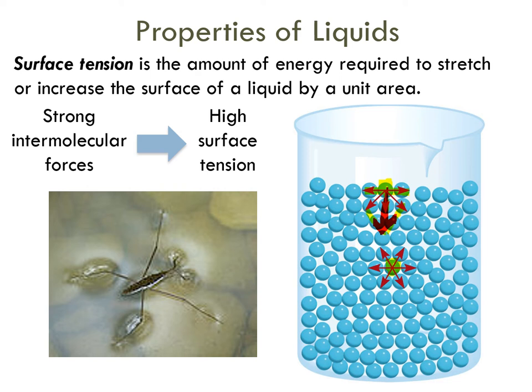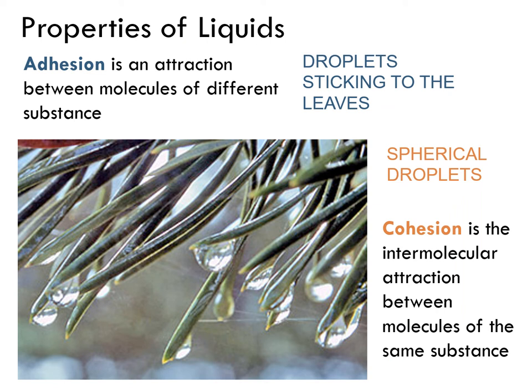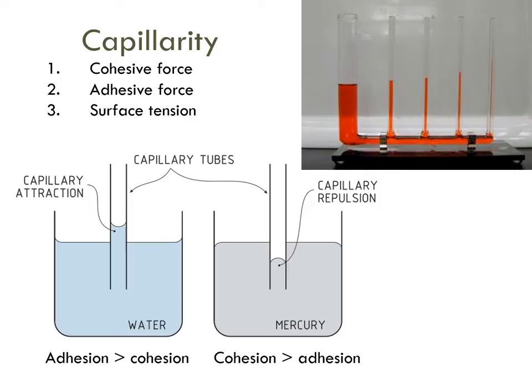Surface tension is also the mechanism that some insects use to walk on water. Water droplets don't have a perfect spherical shape when on leaves because they are also adhering to the surface. This shows two phenomena happening simultaneously: adhesion — the attraction between water and the surface material due to intermolecular forces — and cohesion, which is the hydrogen bonding inside the water trying to keep it in a spherical shape.